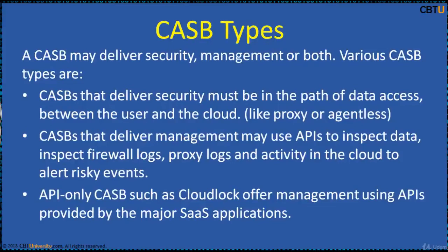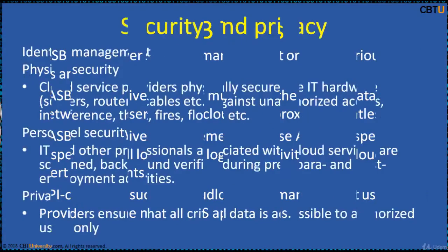A CASB may deliver security management or both. CASBs that deliver security must be in the path of the data access between the user and the cloud. CASBs that deliver management may use APIs to inspect data, inspect firewall logs, proxy logs and activity in the cloud to alert on risky events. API-only CASBs such as cloud log offer management using APIs provided by the major SaaS applications.